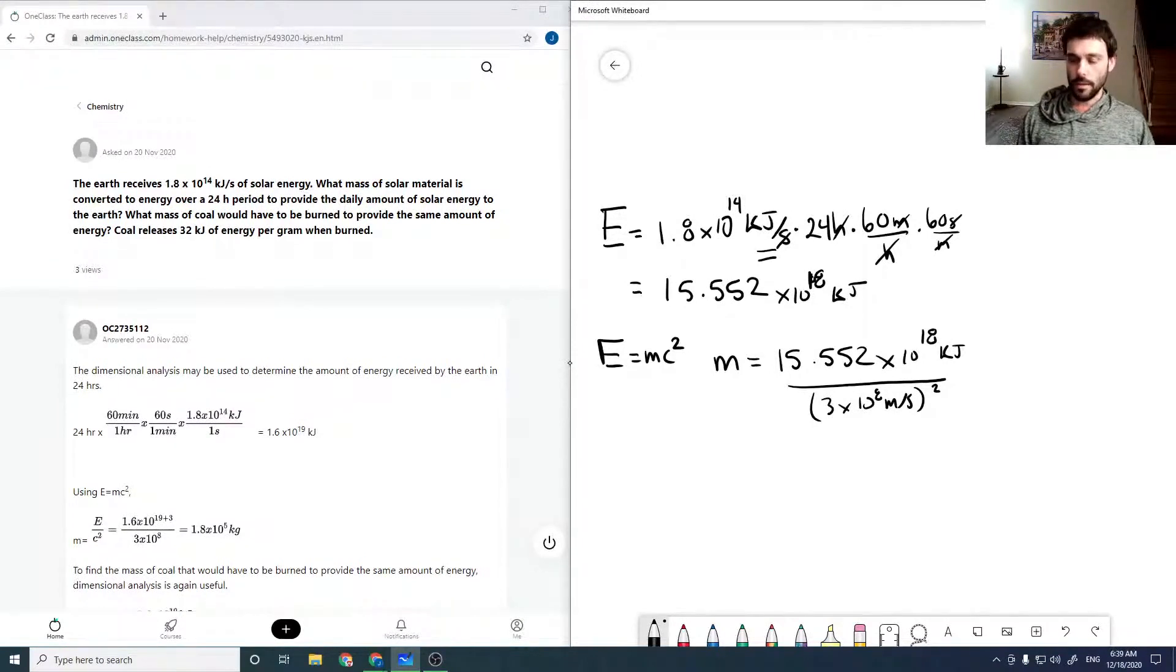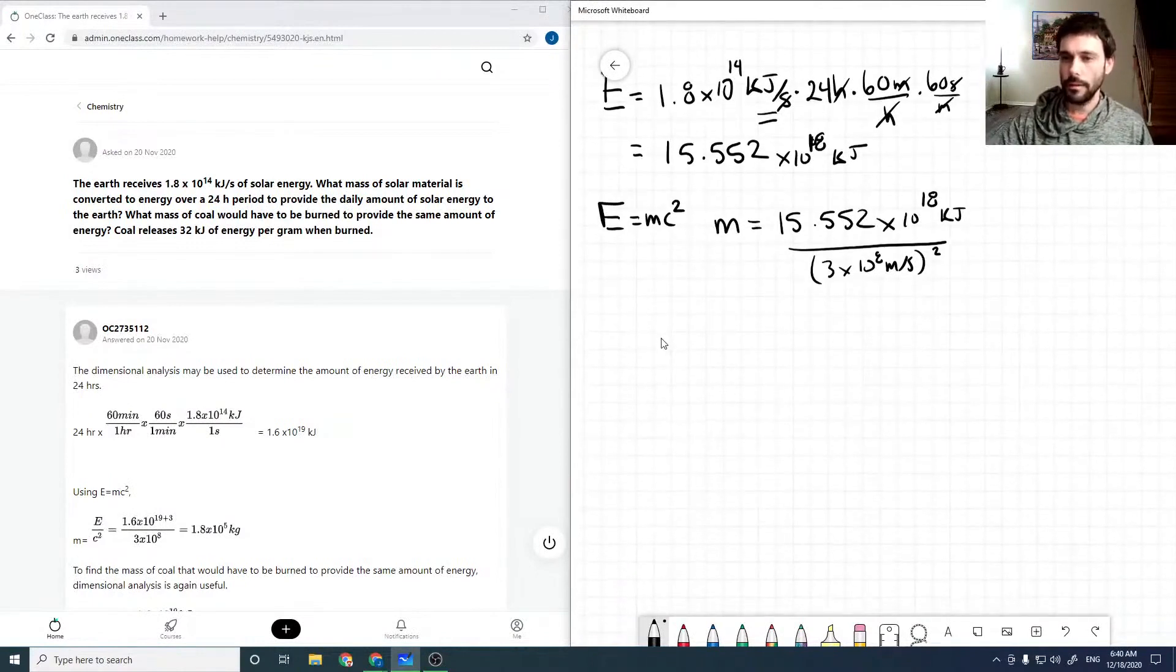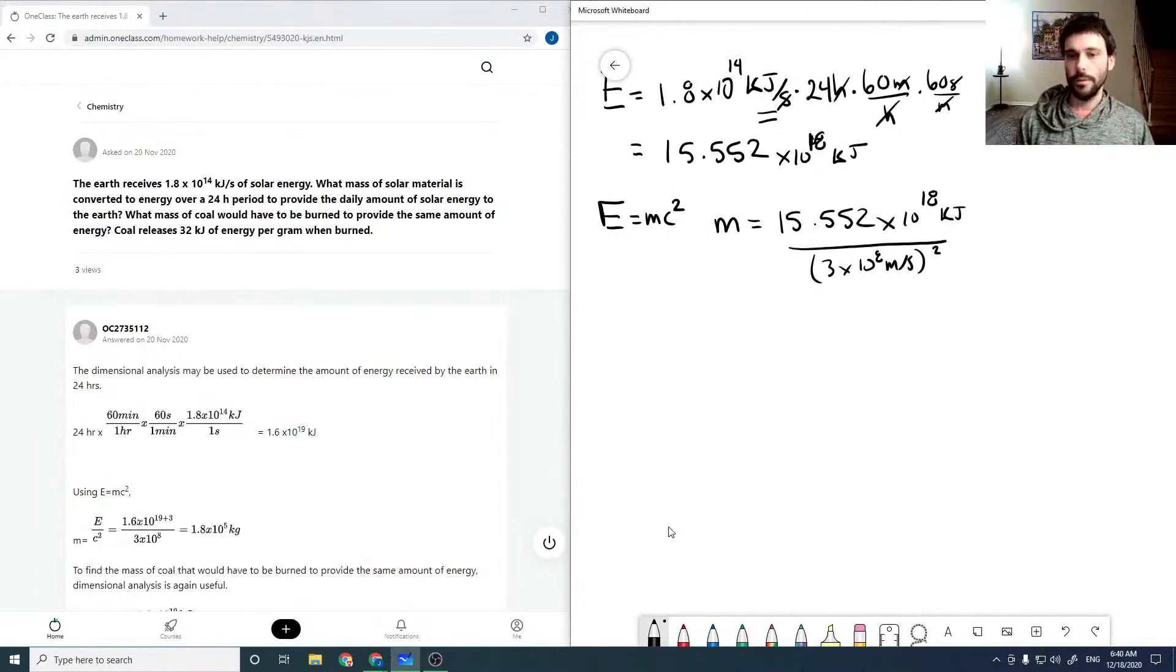So now to get a unit of mass out, we're going to need this to be in joules. And then recall that a joule is a kilogram meter squared per second squared. So that will cancel the meter squared per second squared on the bottom and give you kilograms out the other side. So this would be a thousand joules per kilojoule, canceling the kilojoules.